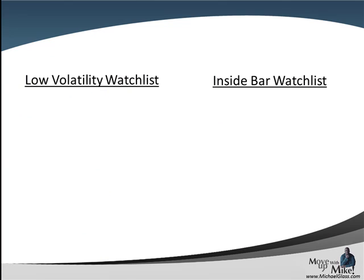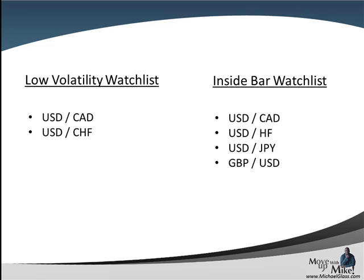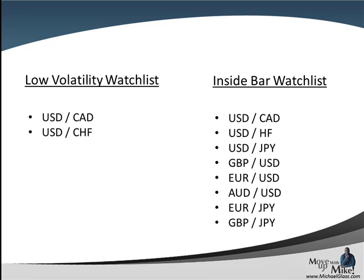As we move to our watch list, we start off with our low volatility watch list, which is our one-hour time frame using Bollinger Bands. We're going to be watching the Dollar Canadian and the Dollar Franc. For our inside bar watch list, we're watching today's range — Tuesday compared to Monday — and we have the mother lode: the Dollar Canadian, the Dollar Franc, the Dollar Yen, the Pound Dollar, the Euro Dollar, the Aussie Dollar, the Euro Yen, and the Pound Yen. So we had a plethora of inside bars. It will be interesting to see if we get breakouts in the rest of the trading. We had a lot of pairs move upwards, and now the market breathed to digest what they saw.